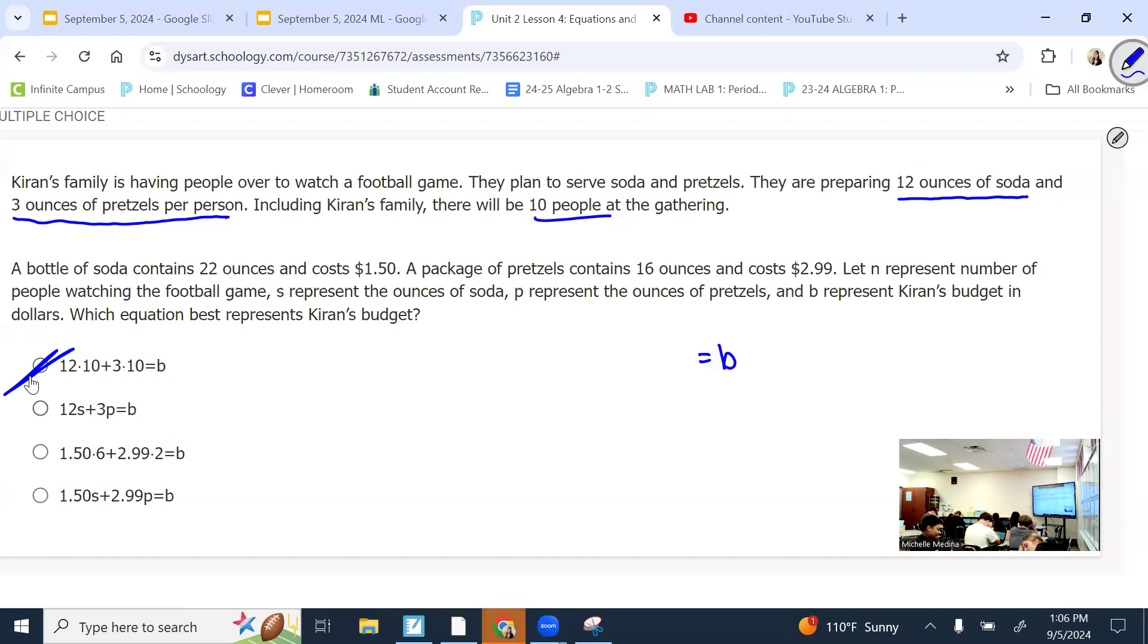Okay. So, Kieran's family is having people over to watch a football game. They plan to serve soda and pretzels. They're preparing 12 ounces of soda and three ounces of pretzels per person. Including Kieran's family, there will be 10 people at the gathering. They want to know which equation best represents his budget. This first one, they're pointing out 12 times 10, 3 times 10. That must be the 12 ounces of soda for every 10 people. And the 3 ounces of pretzels for every 10 people. Does that have anything to do with the budget? No. That's just giving me the amount of what I need. Not anything money-wise.